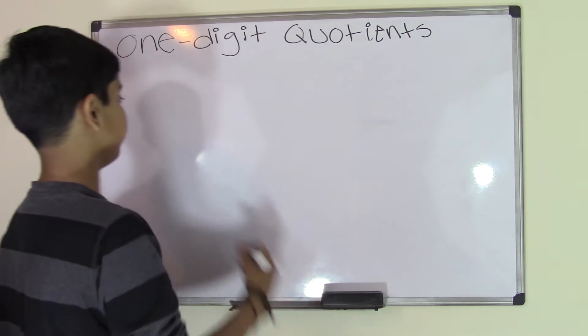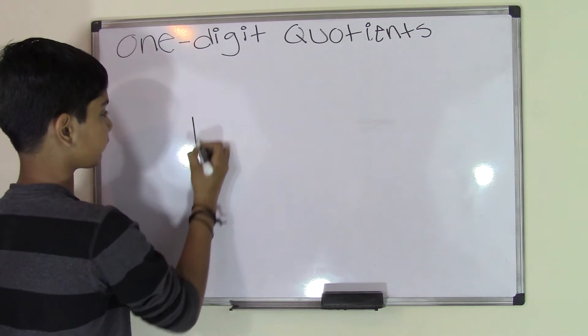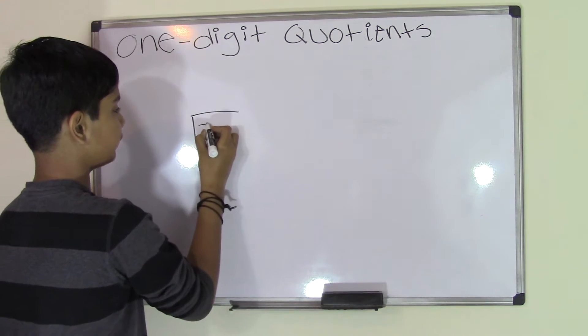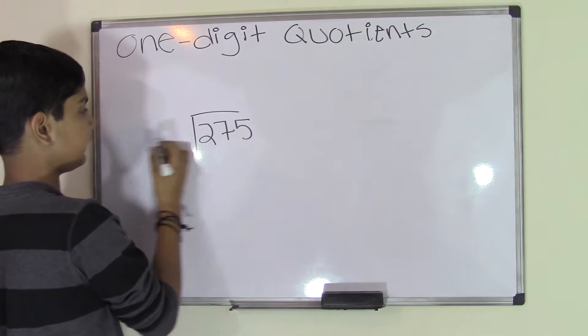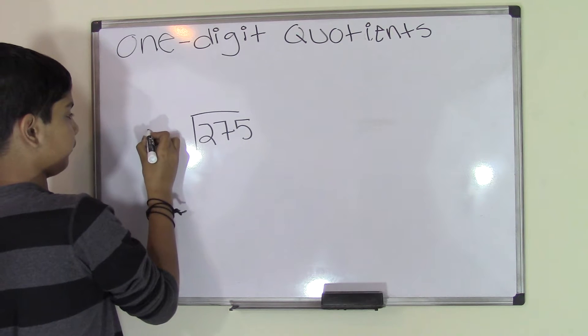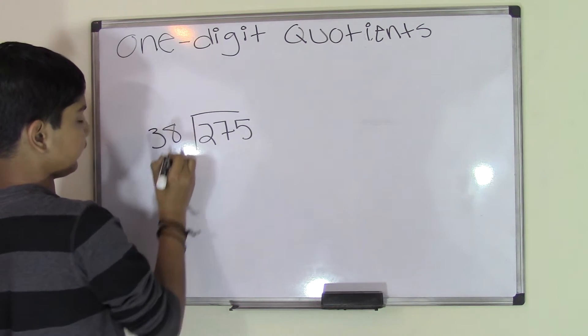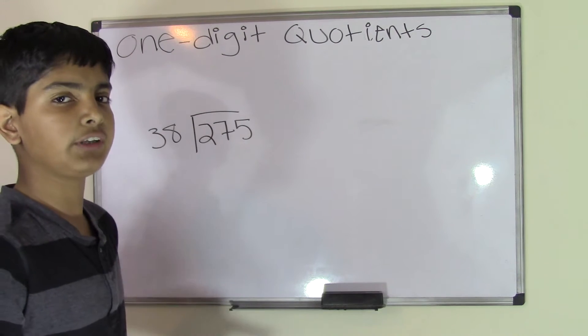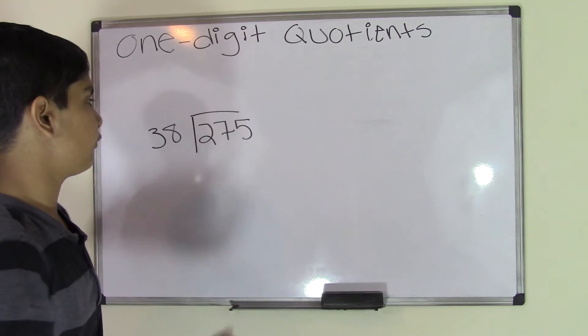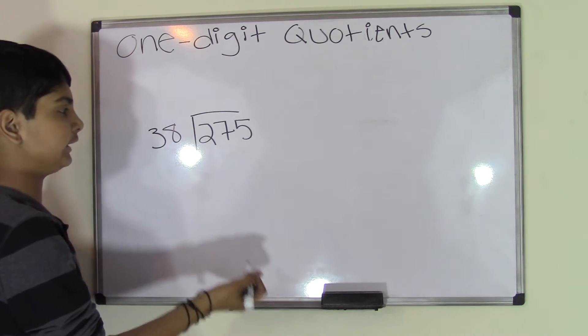For example, you get 275 as a dividend and 38 as the divisor. Well, this looks really hard, but let me show you how to do it the easier way. First, we need to estimate.